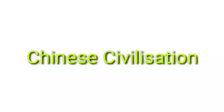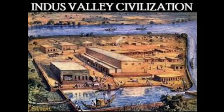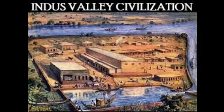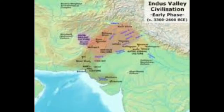Today we are going to discuss about Indus civilization. The Indus Valley civilization is one of the most important and earliest civilizations of the world. The Indus civilization is also known as the Harappan civilization. It covers an area of over 1.5 million square kilometers in India and Pakistan.